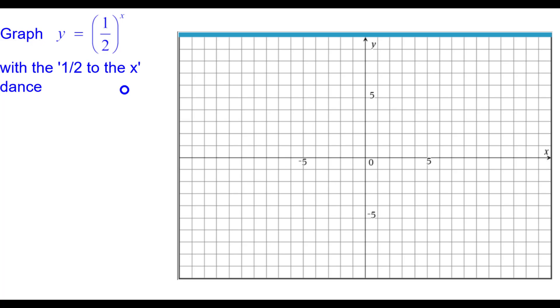Graph y equals 1 half raised to the x power with the 1 half to the x dance. Start with the initial point at 0, 1 because 1 half raised to the 0 power equals 1. From the origin, we'll plot our other points.